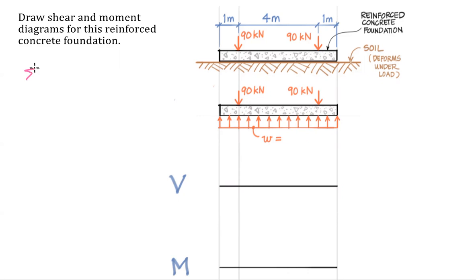So why don't we do this? Summation of forces in the y direction is equal to zero. That means that downward, I have 90 kilonewtons plus 90 kilonewtons. That's equal to w times our length of six meters. So we're doing this little equation of equilibrium, we're going to distribute that force along this entire length. And that means that w is equal to 180 divided by six equals 30 kilonewtons per meter.